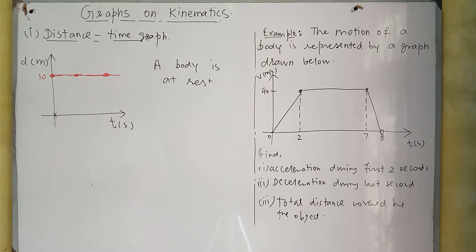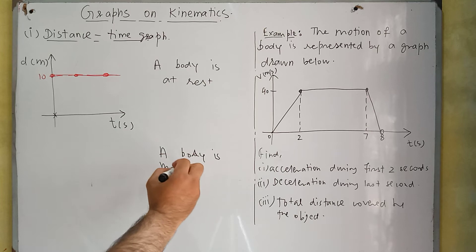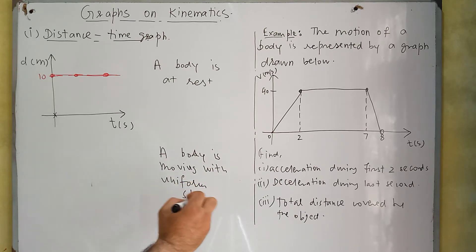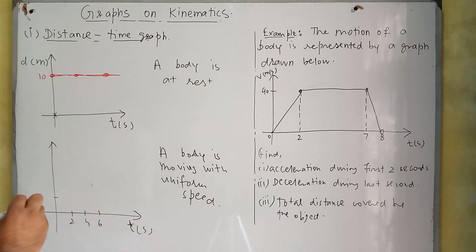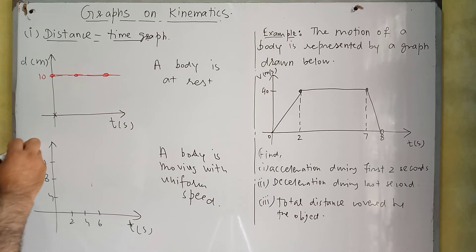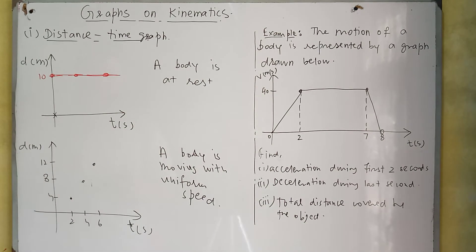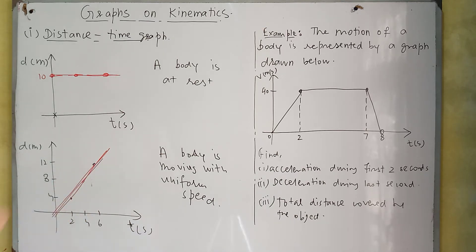Similarly, we can have a graph in which a body is moving with uniform speed. This will be the graph of a body which is moving with uniform speed. On the x-axis we have time in seconds and on the y-axis we have distance. This is the graph of a body moving with uniform speed.